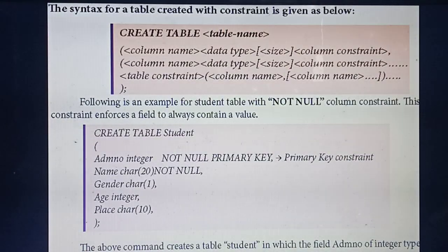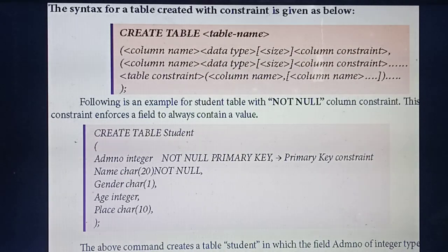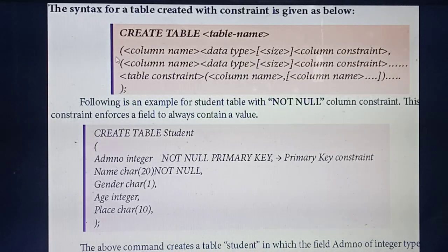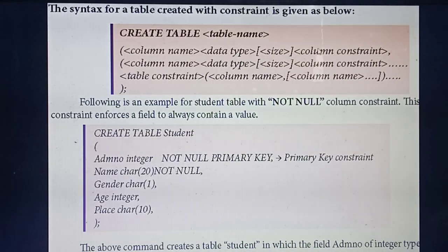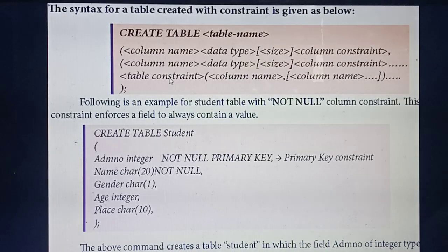Here they are giving the syntax for creation of table with column constraint. The syntax is: CREATE TABLE, table name, then inside the bracket, column name, data type, size, then column constraint — this is very important, the same thing you will do in your practicals. Likewise, all the columns you should mention. For table constraint, you give the constraint name then the column names.